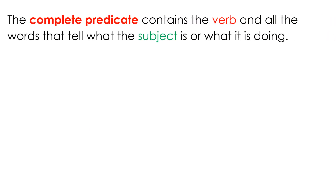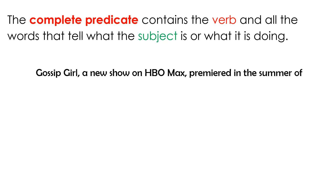The complete predicate contains the verb and all the words to tell what the subject is or what it is doing. In 'Gossip Girl, a new show on HBO Max, premiered in the summer of 2021,' we already know that 'Gossip Girl, a new show on HBO Max' is the subject. What is the subject doing? 'Premiered in the summer of 2021.' That's the complete predicate.